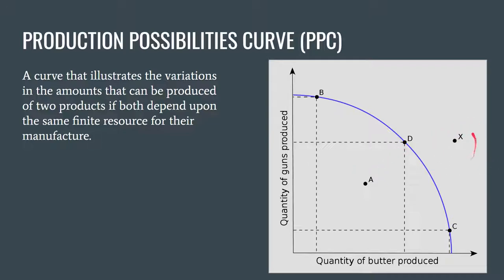Then there's point X, lying to the right of the curve. Anything to the right of a production possibilities curve represents something that is impossible given the current level of output. The only way for this producer to reach point X would be to shift the curve, which would require new technology, an increase in their labor force, or new resources available to them.